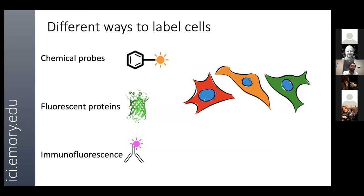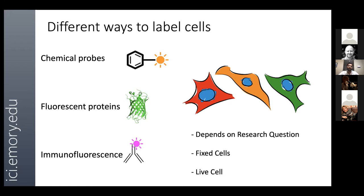There are different ways to label a cell: chemical probes, fluorescent proteins, immunofluorescence, or a combination. For example, you could label the nucleus with DAPI (a chemical probe), use cells expressing mito-RFP (a fluorescent protein), and label actin with a chemical probe, all followed by immunofluorescence. The method you choose depends on your research question and whether your cells will be fixed or live.